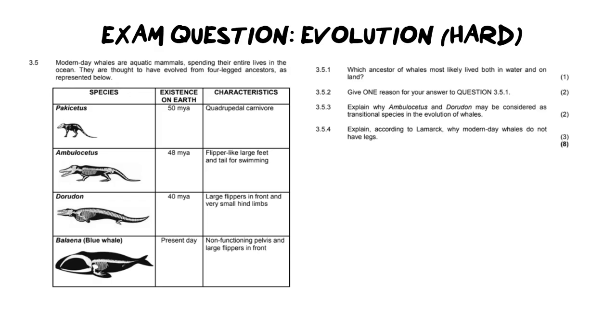The question says modern day whales are aquatic mammals and these aquatic mammals spend their entire lives in the ocean. They are thought to have evolved from four-legged ancestors as represented below. Now we have a table here, and I think the mistake we make often is we get caught up in looking at just the pictures and we don't look at the writing. We think the writing is just extra stuff and we're trying to rely on just a visual thing, and I think that's a mistake.